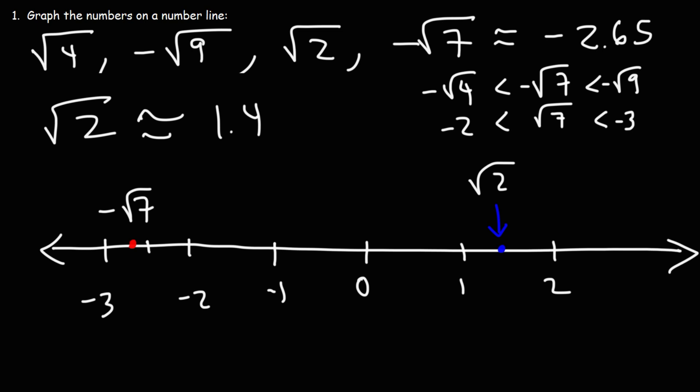So that's one way to graph irrational square root numbers, and that's basically it for this video. Hopefully you found it useful — feel free to comment in the section below. Thanks again for watching.